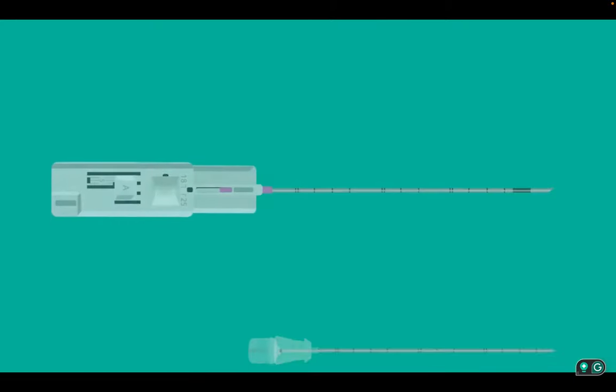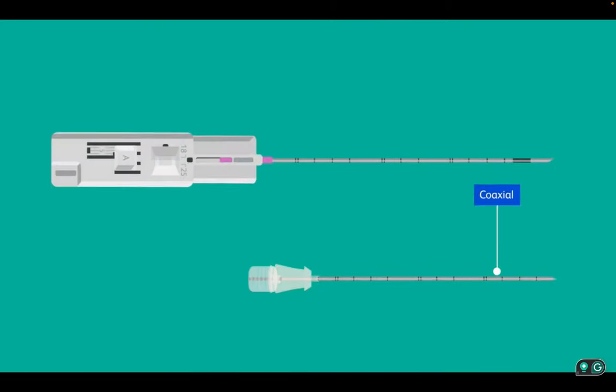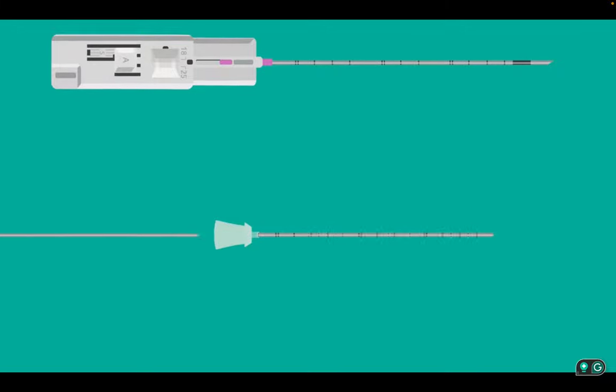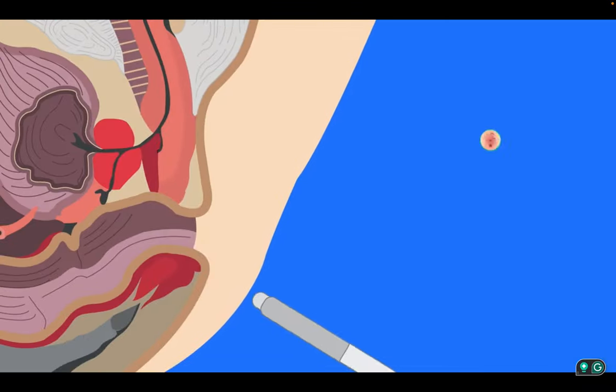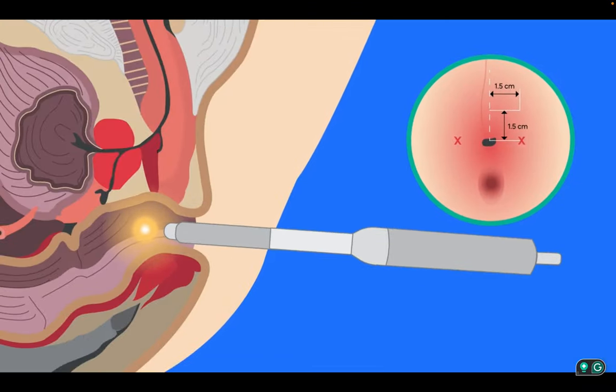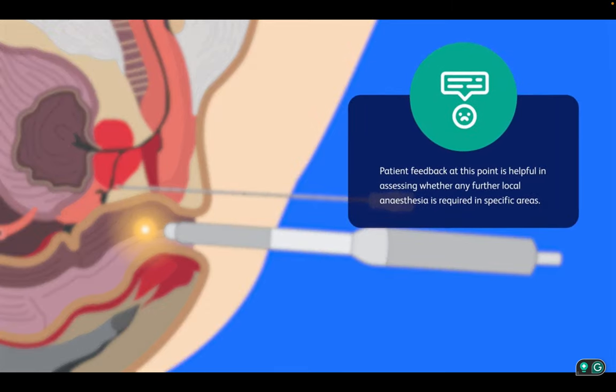The sterile BD Marquis device package containing both the coaxial and the biopsy needle is opened. The coaxial is removed first and flushed with approximately two or three milliliters of saline solution. The ultrasound probe is angled 30 degrees right or left towards the first marked insertion site to provide guidance as the coaxial is inserted. Patient feedback at this point is helpful in assessing whether any further local anesthesia is required in specific areas.